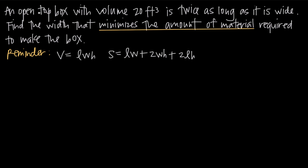It's an open top box, so it has no top — but the amount of material to make the rest of the faces of the box, isn't that just the same thing as surface area? The amount of material required to make it is going to be the surface area of the box. So because we've been asked to minimize the amount of surface area, we're going to need a function for surface area.